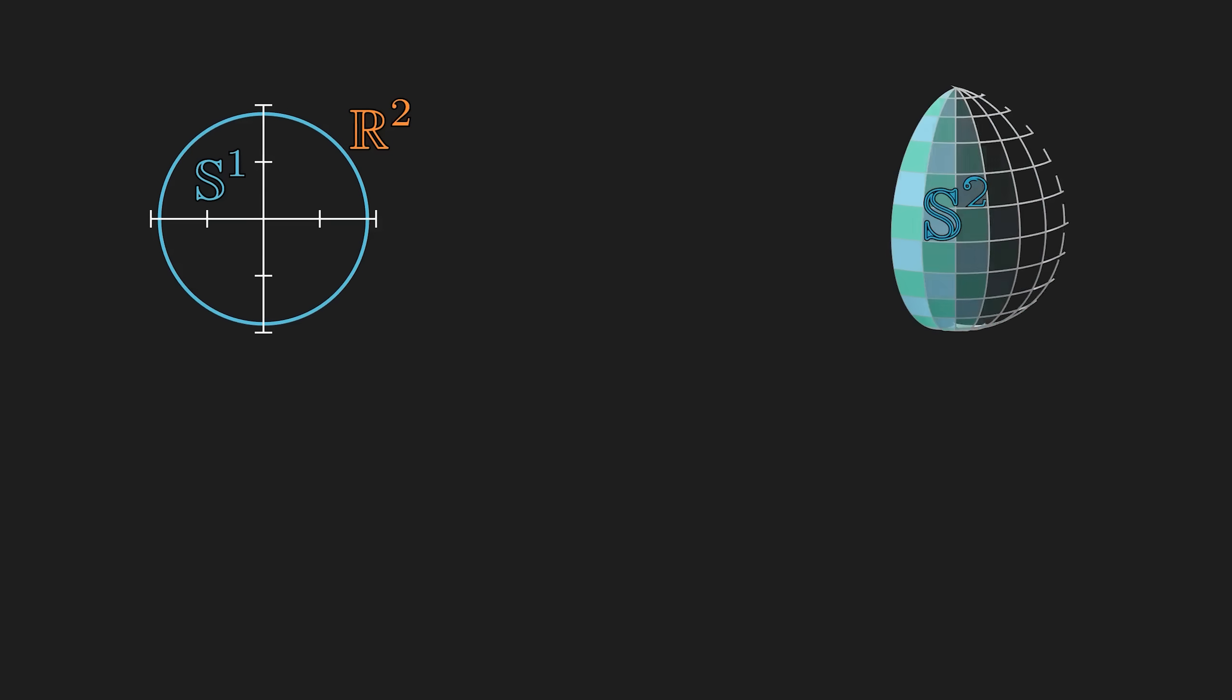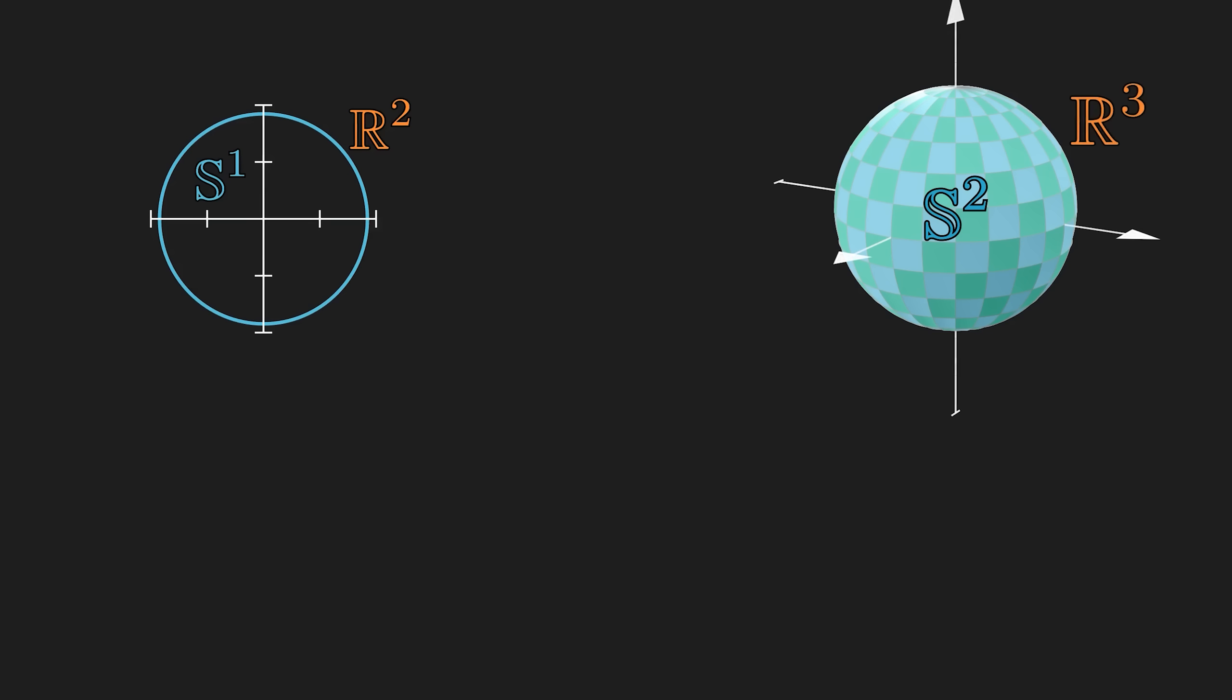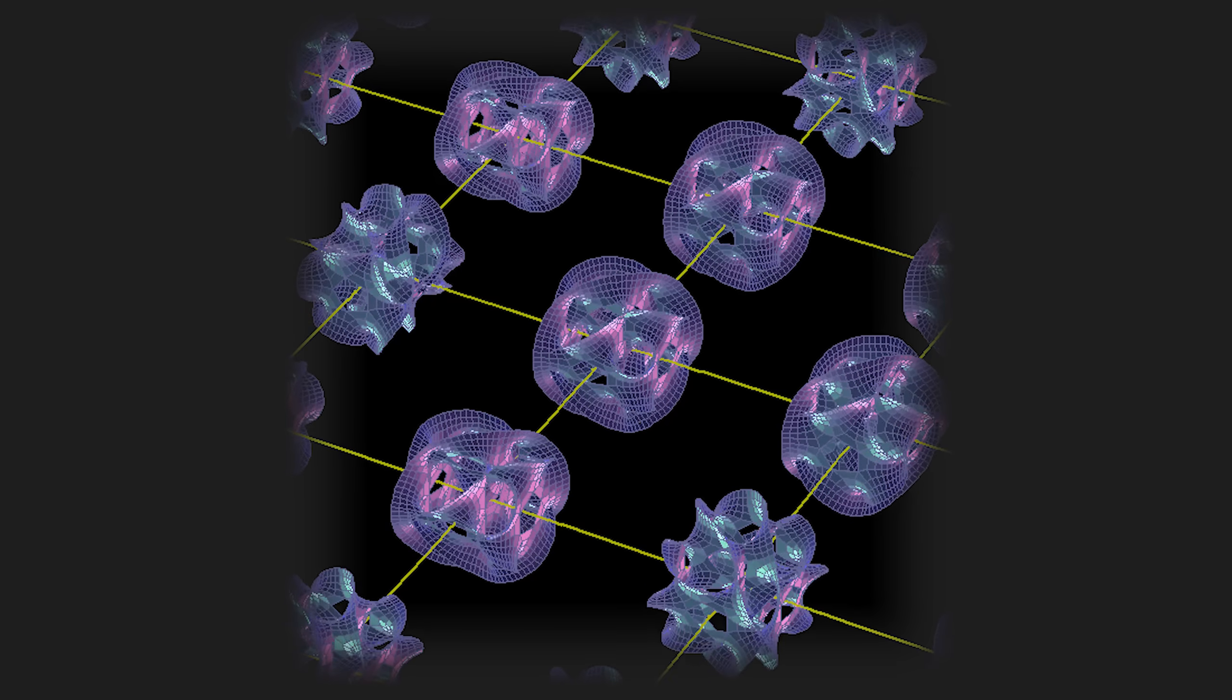As another example, a circle naturally lives in two-dimensional space, and a two-dimensional sphere lives in three, and generally, n-dimensional hyperspheres live in n plus one dimensional space. But these nice ones are exceptions, not the rule.